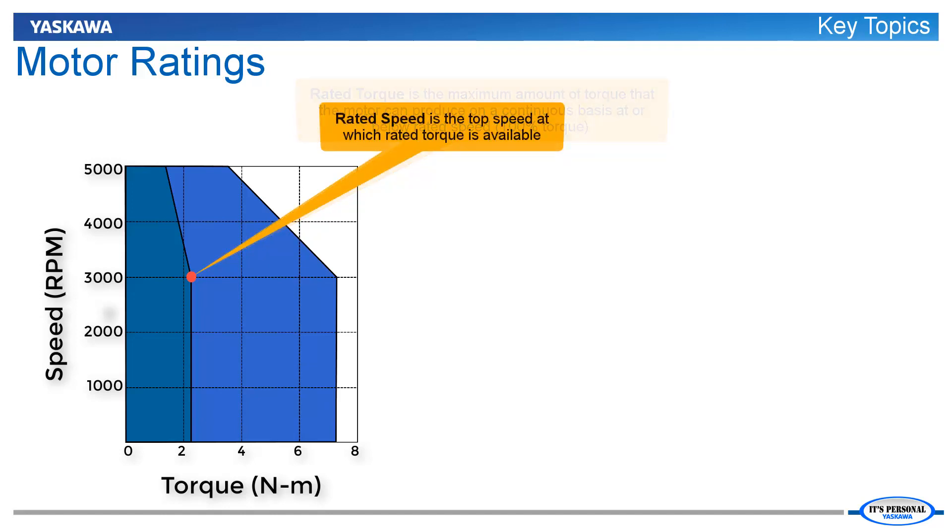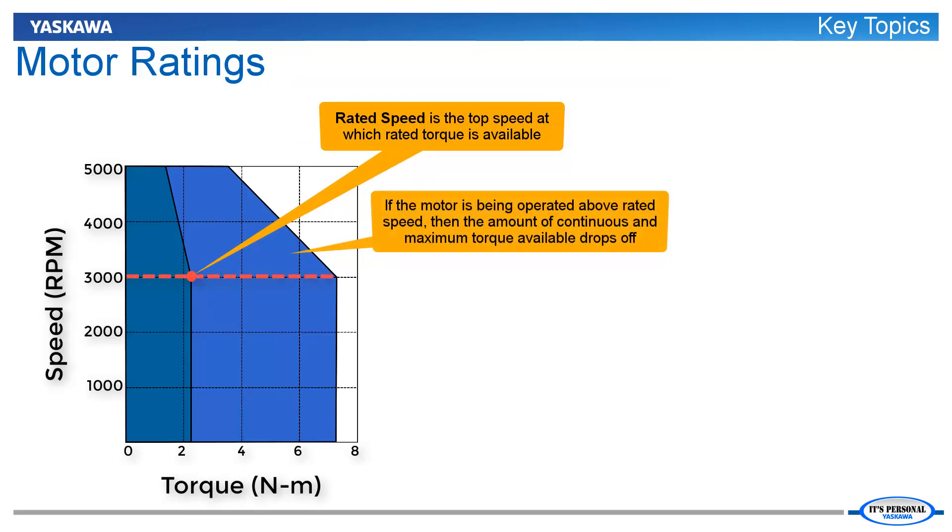Likewise, rated speed is the highest speed at which rated torque is available. The motor can continuously run faster than rated speed, but the torque available drops significantly the faster the motor runs.